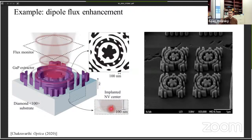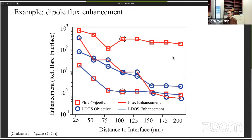We have to worry about minimum feature size and a limited selection of materials, but we can design within those constraints. The goal was to enhance the flux — enhance the interaction of free space light with this implanted NV center. We did two different kinds of objectives: one where we told the computer to maximize the flux, and another where we told the computer to maximize the local density of states (LDOS) at the position of the emitter.